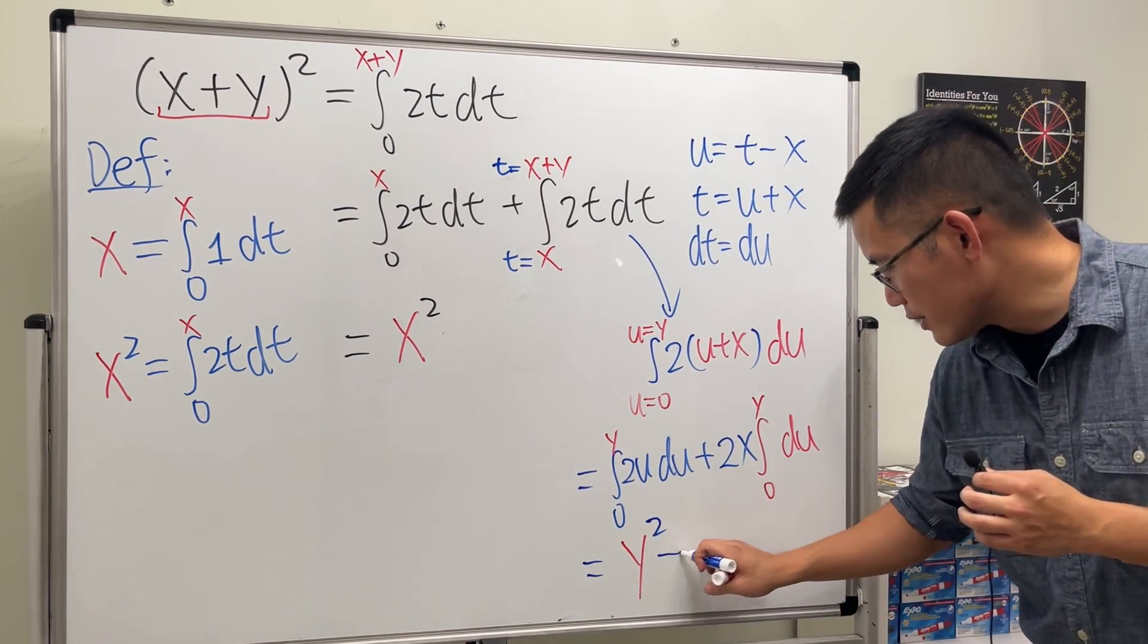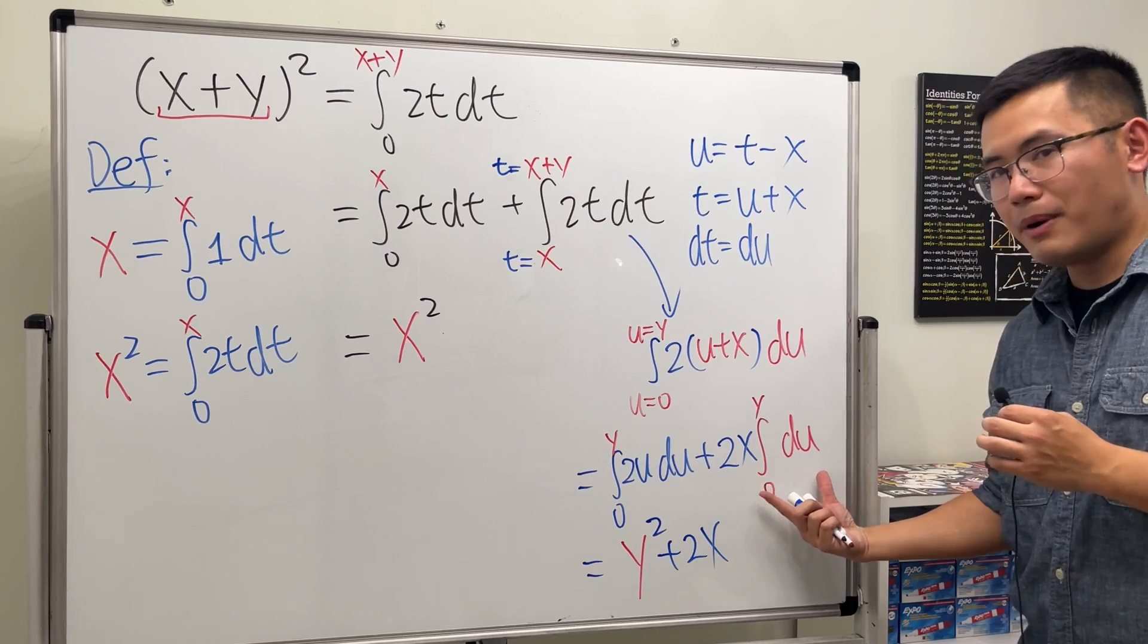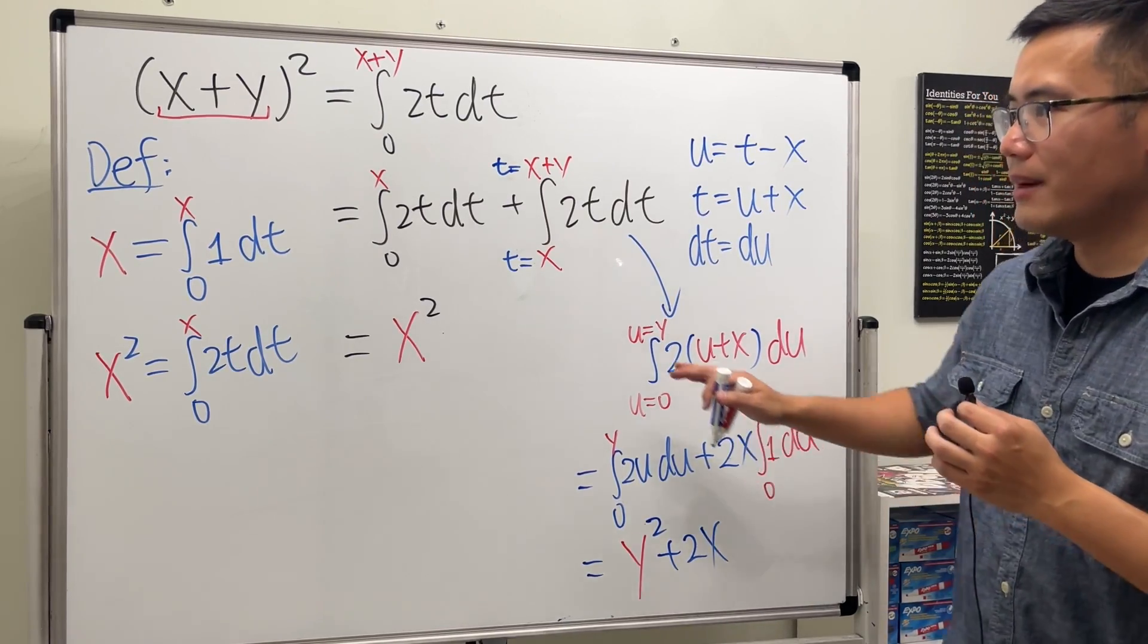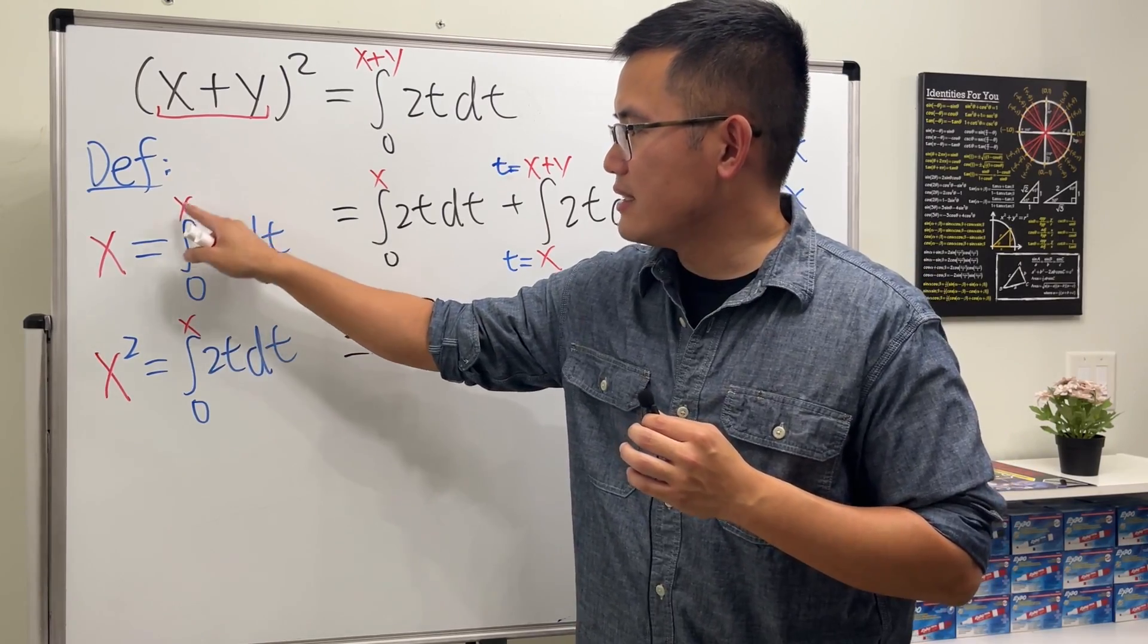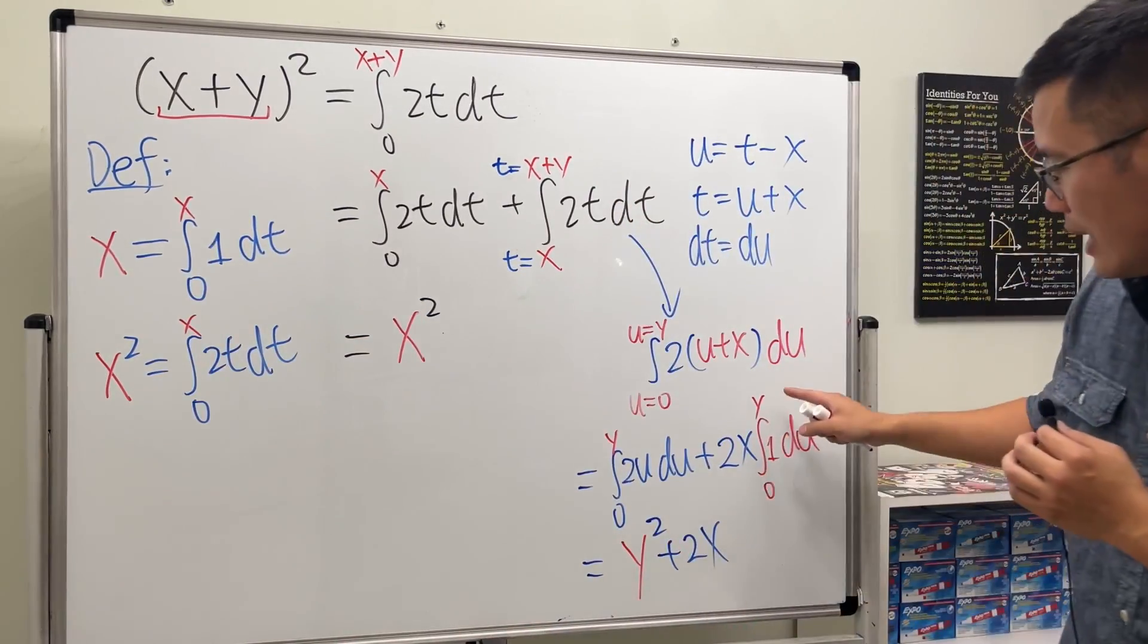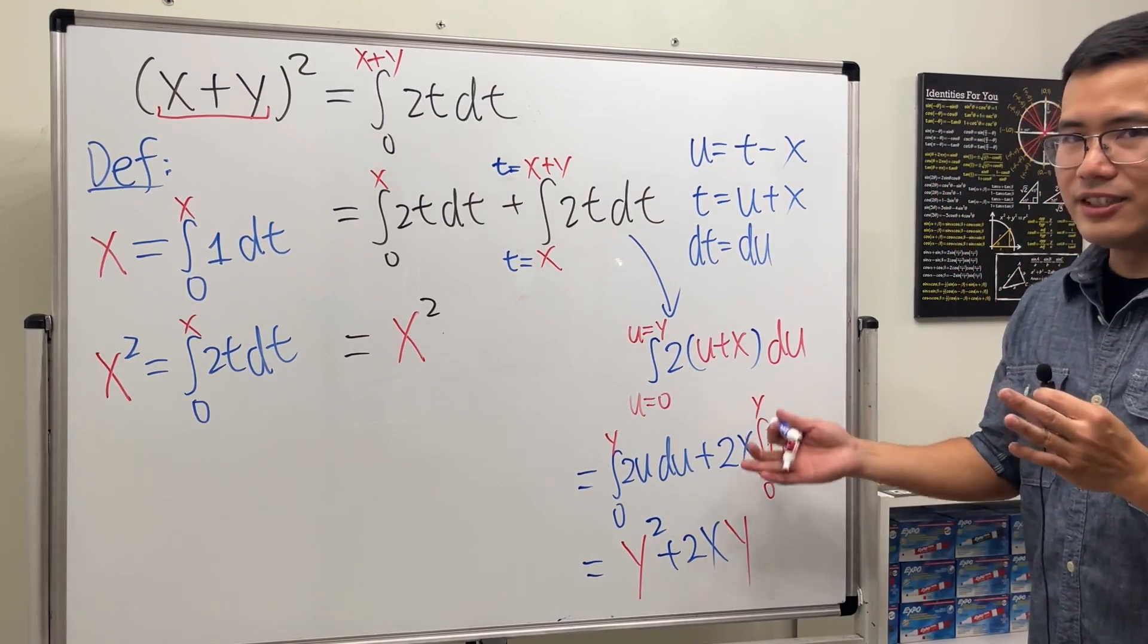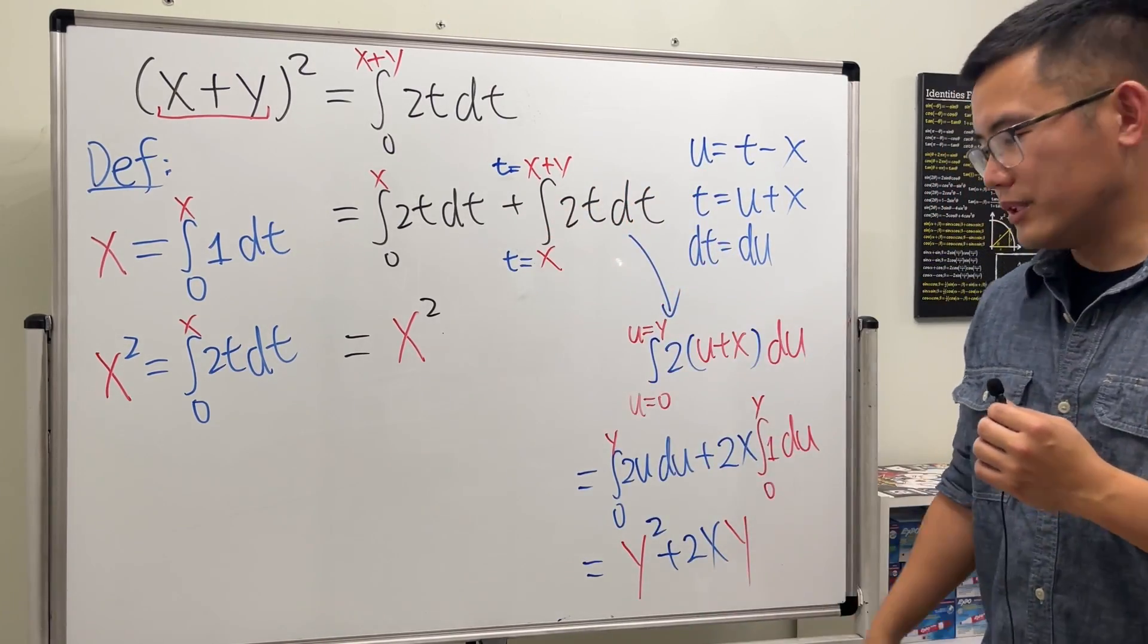And then the 2x is just 2x. And now what's this part? Well, this right here is like we have a 1, so we are talking about this right here. And when we have the x here, that will give us x. But here we have the y, so this part will give us the y. Ladies and gentlemen, this integral is precisely y square plus 2xy. Again, we have the correct answer.